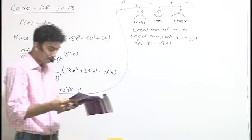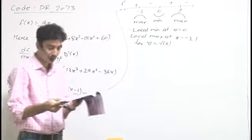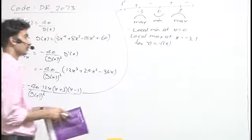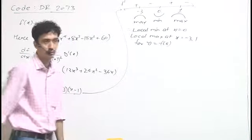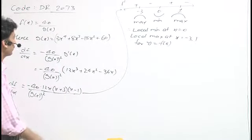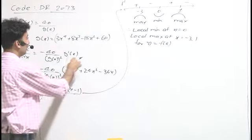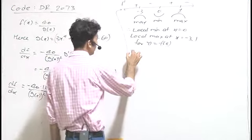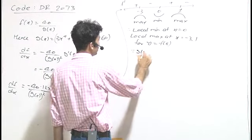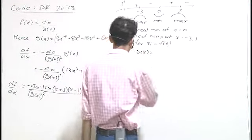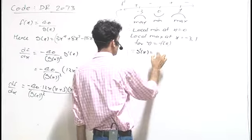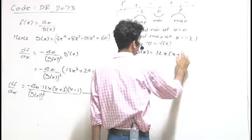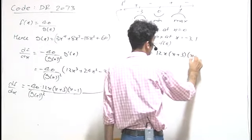For option C, it is asked about the absolute maximum value of f(x). To find the absolute maximum, we will explore g(x). Since g(x) is defined as 3x⁴ + 8x³ - 18x² + 60, g'(x) is 12x(x+3)(x-1).